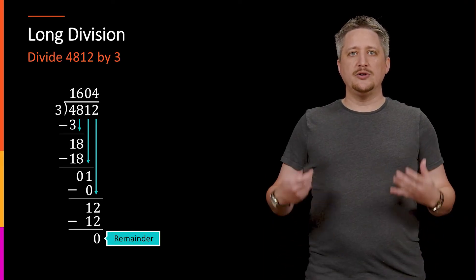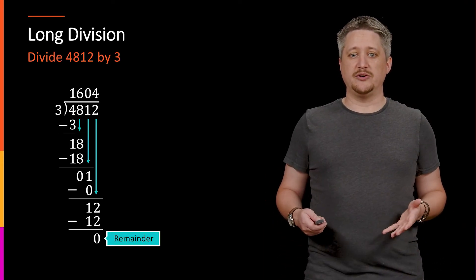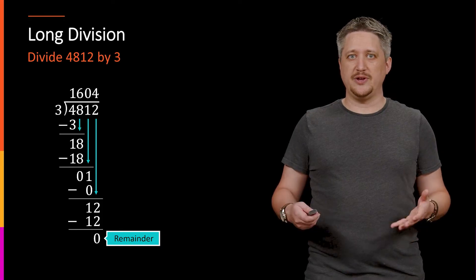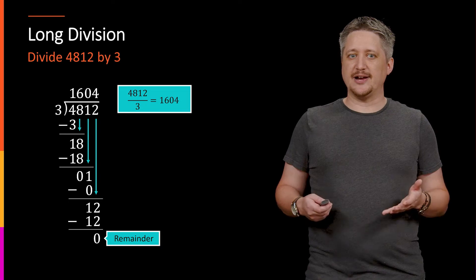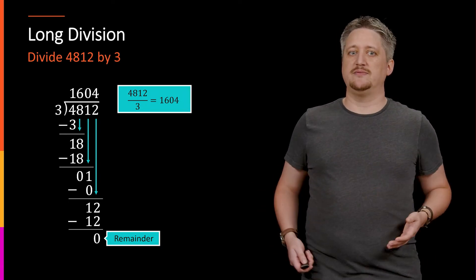All right. So, before we did long division, we went through this whole thing, we had a remainder of zero, but that means that we can rewrite this thing as a fraction equaling what we got. So, here, we could take the 4812, 4812 divided by 3 is 1604,